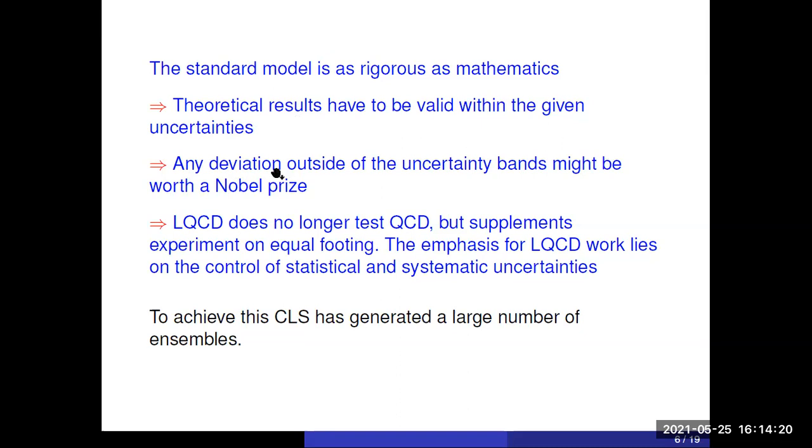That means that if you see any deviation outside of these uncertainty bands, that indicates new physics and possibly is worth pursuing. Lattice QCD no longer tests QCD, which is established beyond any reasonable doubt, but it's really an additional tool to direct experiments to analyze this complicated structure of particles like the protons and neutrons.